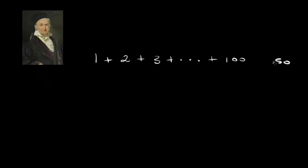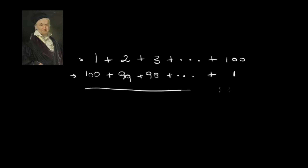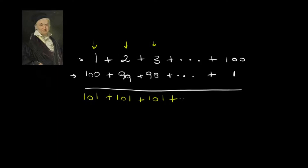What he did was, instead of thinking about this sum only one way, he thought he could sum 1 plus 2 plus 3 in this order, and also 100 plus 99 plus 98 and so on plus 1. Instead of adding these numbers by rows, he decided to do it by columns. So the first column would be 1 plus 100, which is 101. And the second column is 2 plus 99, which is also 101.